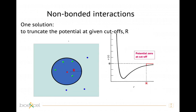The potentials are usually cut at a point called the cut-off. From the cut-off value onward, the Lennard-Jones parameters are no longer calculated, and the Coulomb interactions are also no longer calculated.